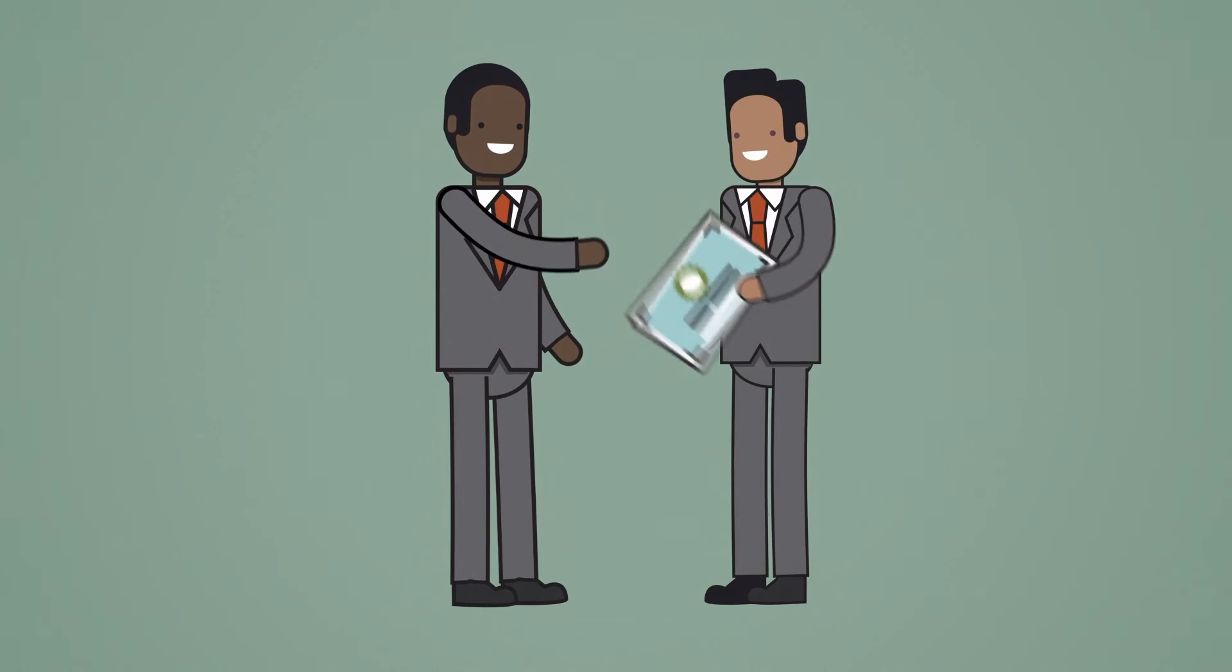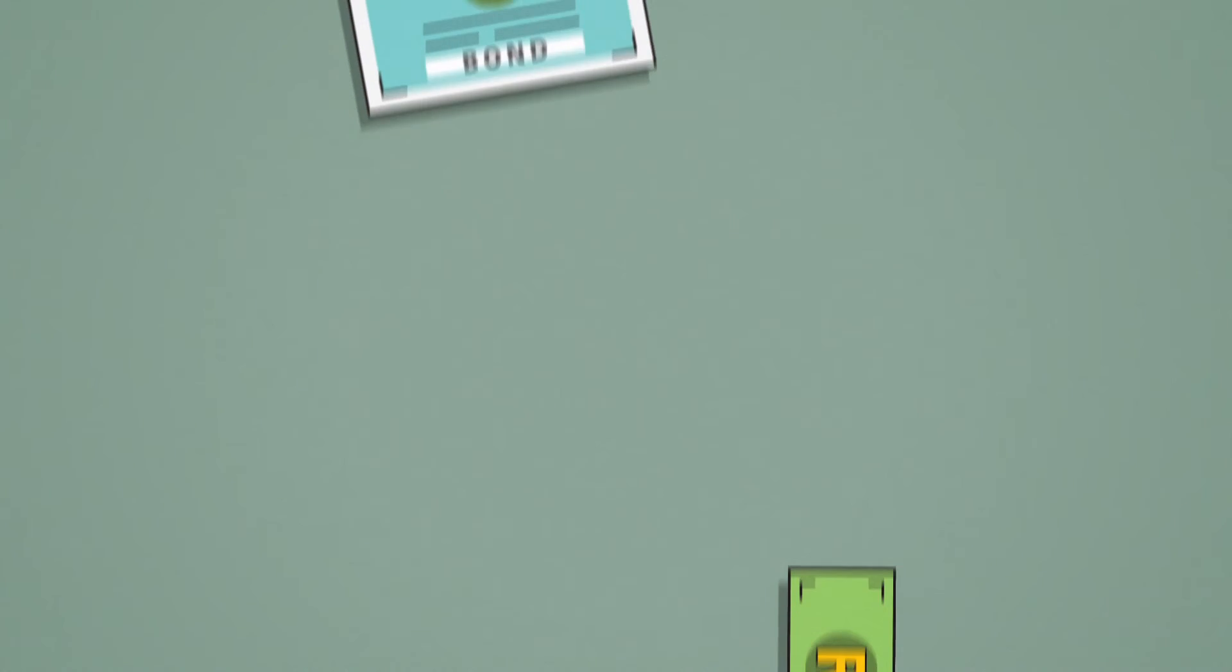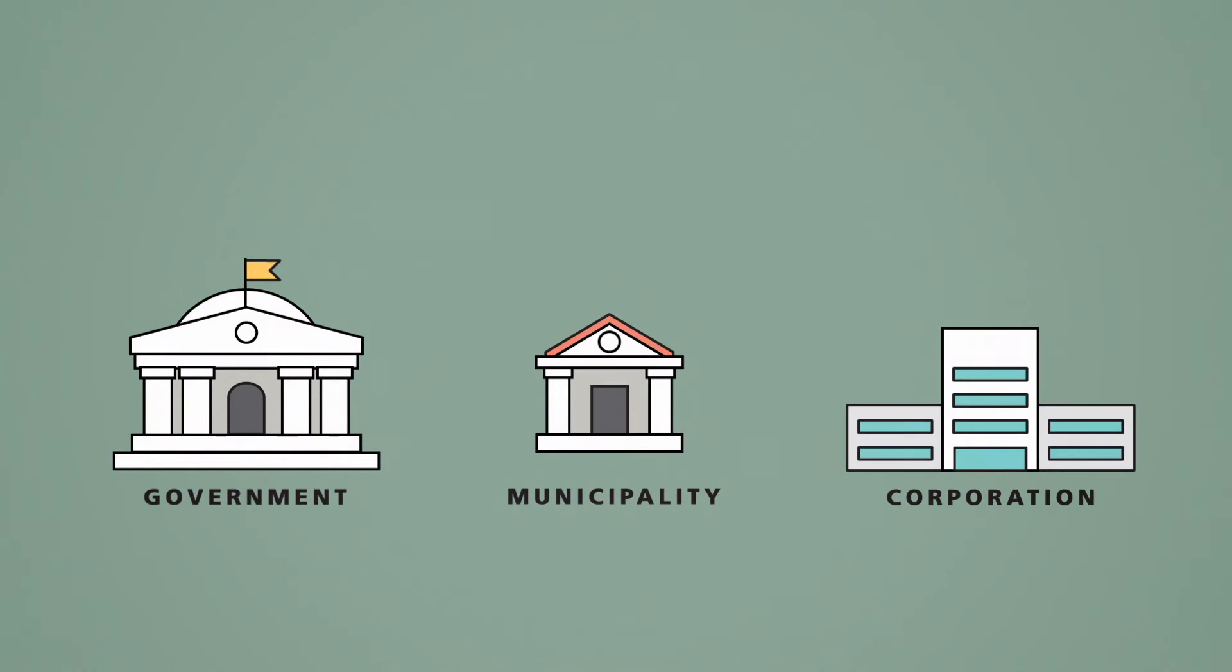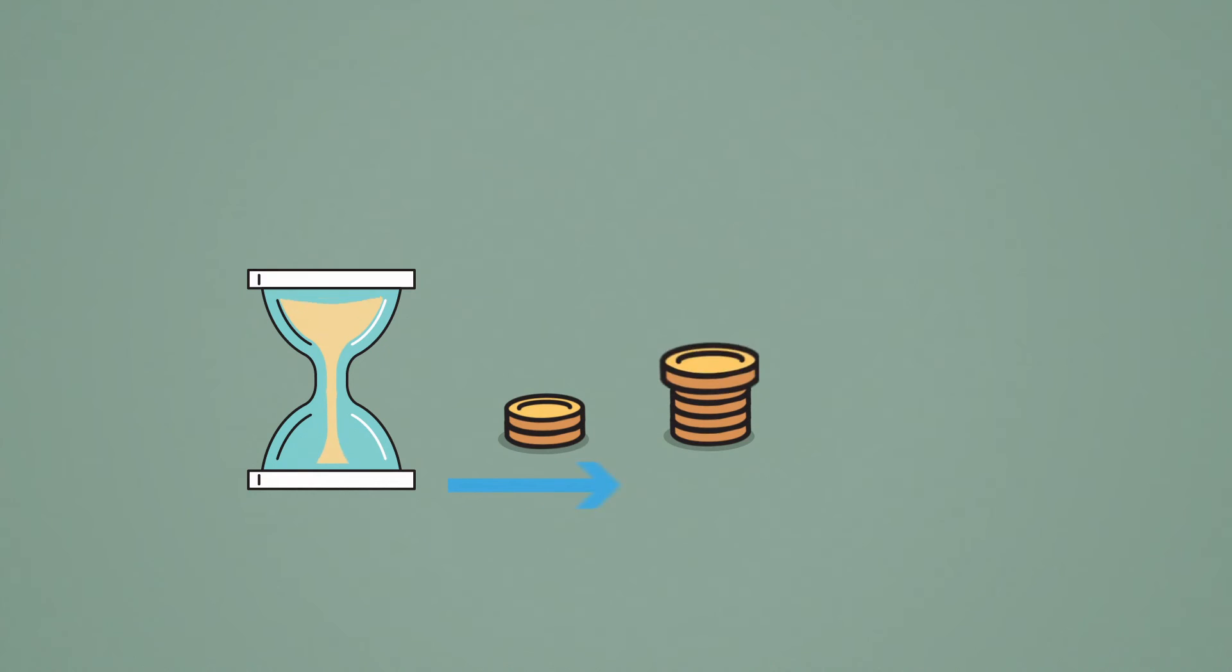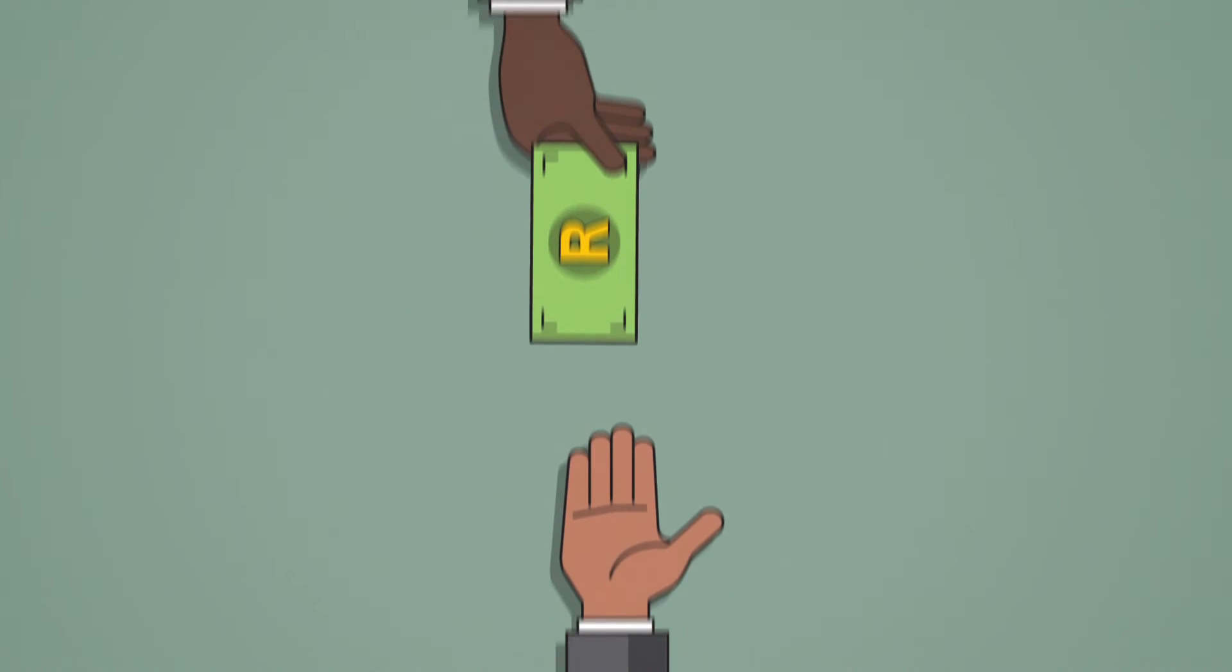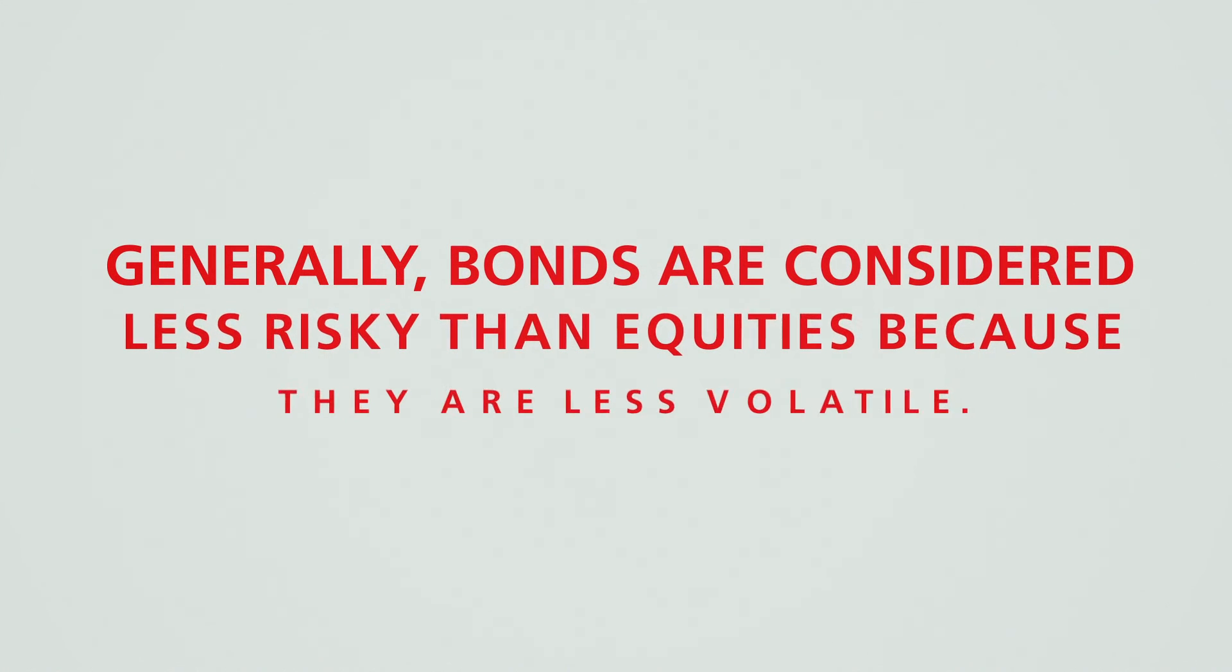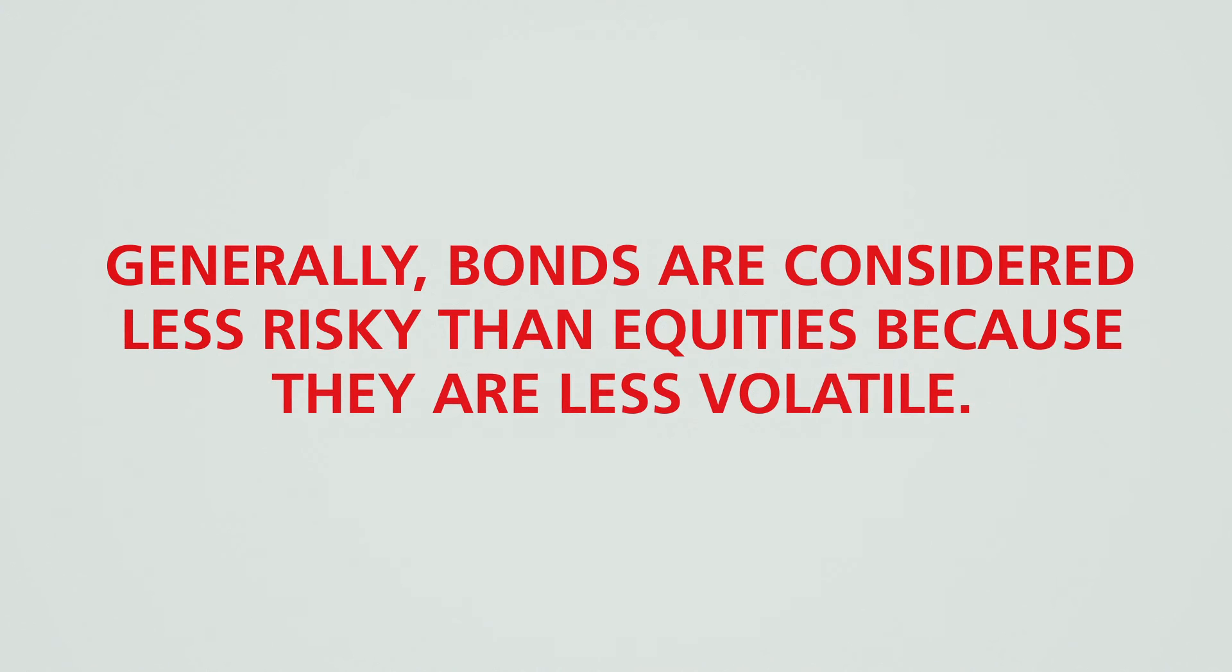A bond is a form of loan, similar to an IOU. When you buy a bond, you are lending money to an entity, typically a government, a municipality or corporation, and you get regular interest payments in return over time. You also get repaid your initial investment amount when the term of the bond ends. Generally, bonds are considered less risky than equities because they are less volatile.